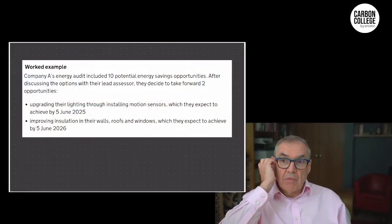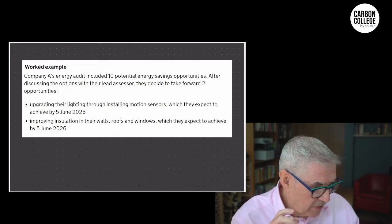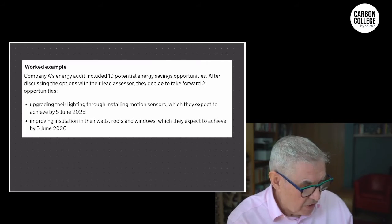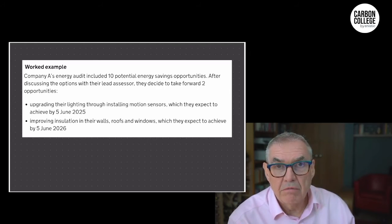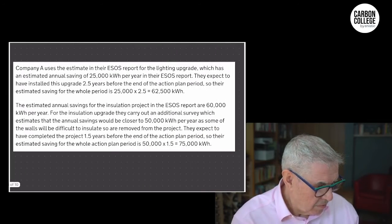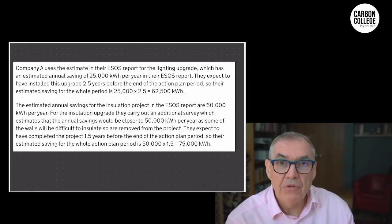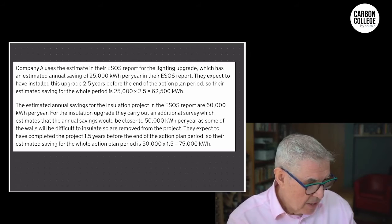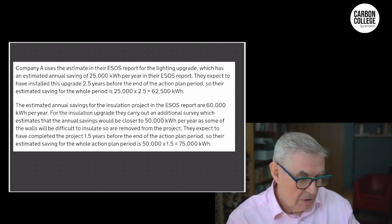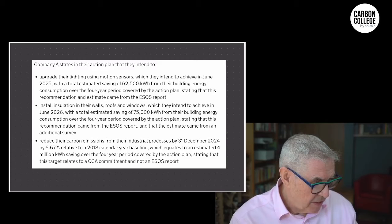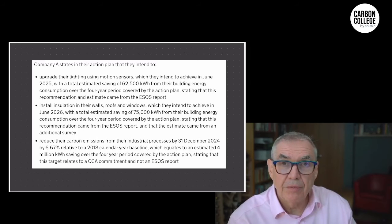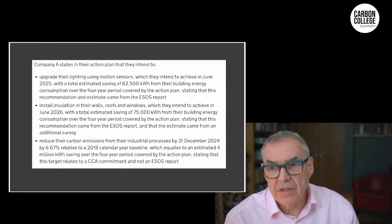If you want to look at a worked example, they do give one in the guidance. This is the example they give — they're going to do 10 projects, here are two of them: upgrade their lighting and improve the insulation. Here's the kind of calculations you've got to do, and don't forget you've got to back these up — how did you get these numbers? That's the kind of calculation you're supposed to do for each of the projects you put down. That's the kind of level of detail you need for these things.